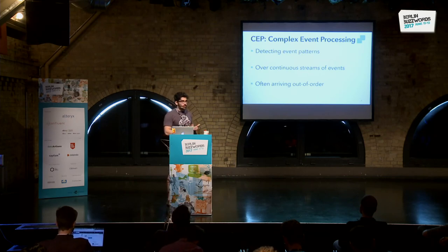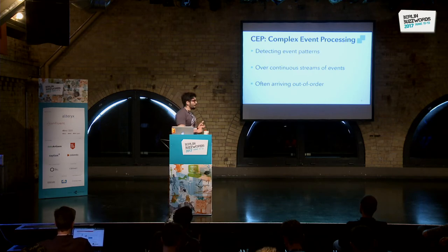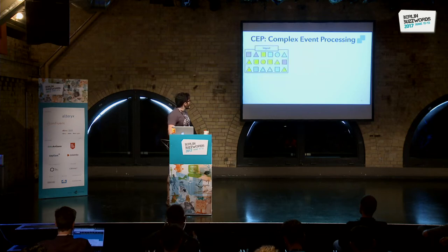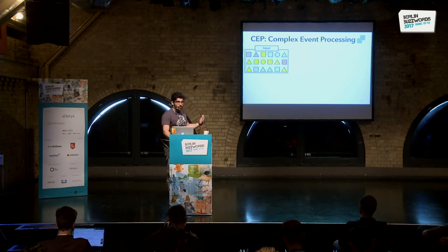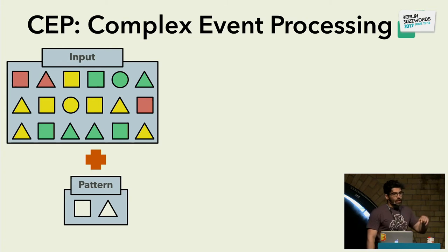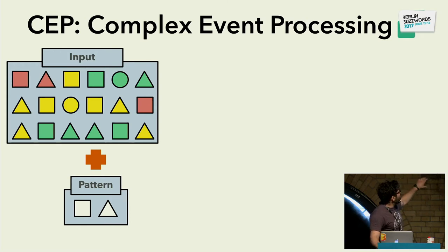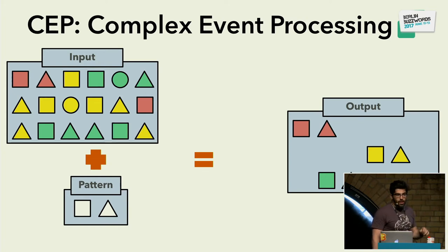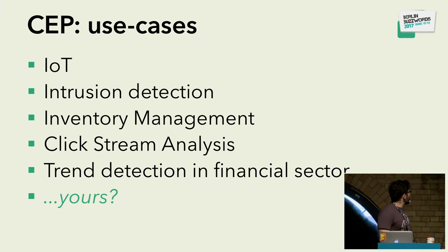What is CEP? Complex event processing stands for the art of detecting event patterns over continuous streams of events that often arrive out of order. To visualize it, imagine your input is composed of elements of different shapes and colors — a stream. You have a pattern meaning you want to detect all combinations of a rectangle followed by a triangle of the same color. The CEP library takes your input and gives you as output all matching sequences of events.